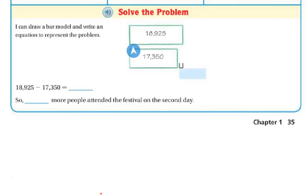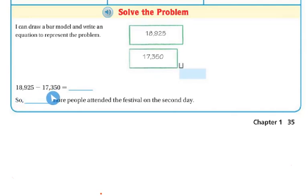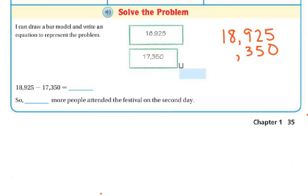Looking at the bar model, I put my 18,925 here and my 17,350 here. This little space right here is the space that I'm missing. So 18,925 minus 17,350. Let me set it up on the side. Remember when you're setting it up to line up your numbers. So zeros in the ones place there. I've got 5, 3, 7, 1, and I'm going to subtract.